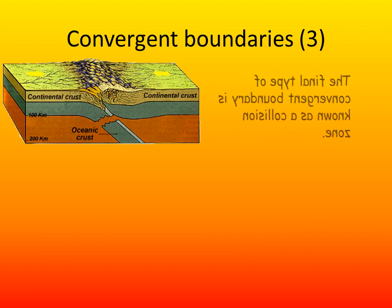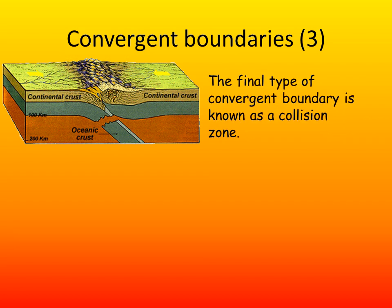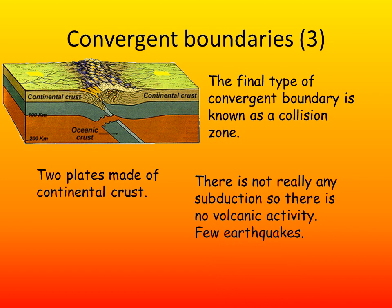The final type of convergent boundary, where plates move together, is known as a collision zone. This is where two plates made of continental crust meet. There is not really any subduction, so there is no volcanic activity and there are few earthquakes. The most famous example is at the Himalayas, where the Indian plate is pushing into the Eurasian plate, causing folding of the material between them. This sedimentary rock is pushed upwards, forming the Himalayan mountains. Because it is sedimentary rock that was previously beneath the deep sea, we are able to find fossil remains on the top of the Himalayas.